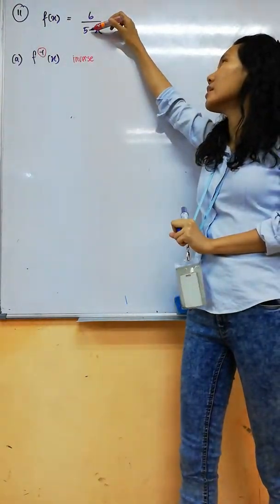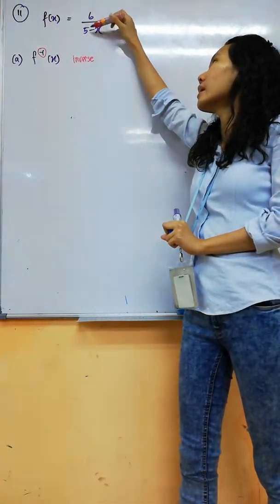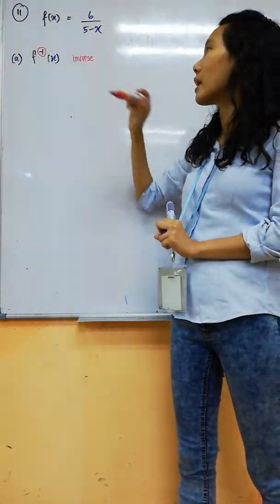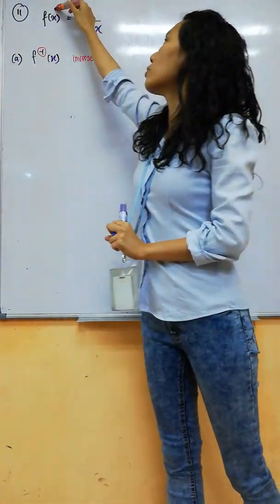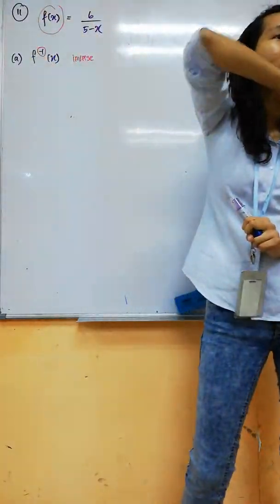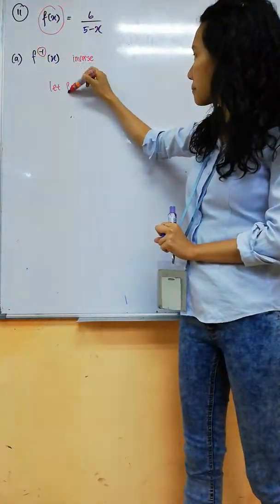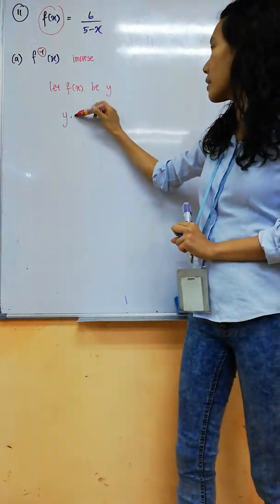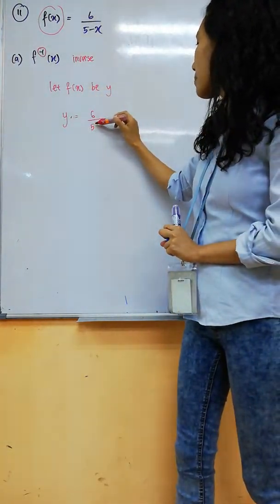Because how do I start? Minus negative 1, and then what? Because this is denominator. So try to do with algebra. To do with algebra, you let this be y. Always write this. So y is 6 over 5 minus x.